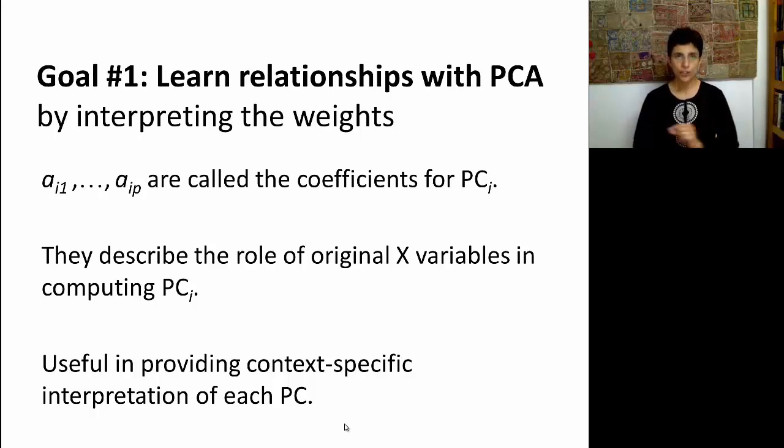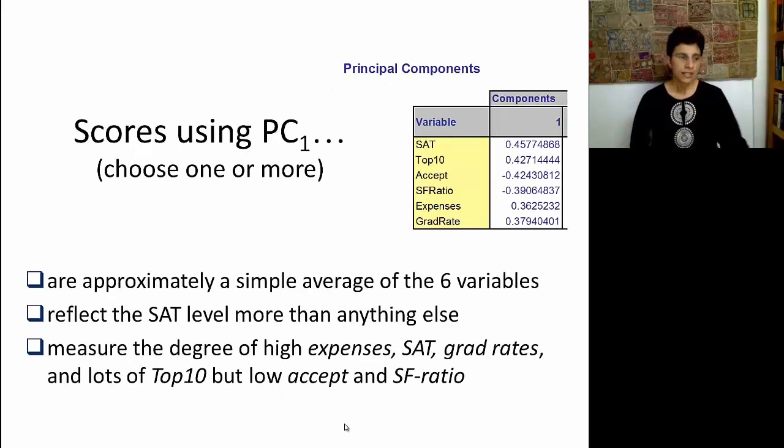Let's first look at the first goal, which is learning the relationships between the different measurements. How do we do this? Well, we have to concentrate on the weights that we just received. These weights, or also called coefficients, are the key to understanding what is the relationship between the original X's and the resulting PCs. Take a look at this first component at the weights, and see if you can answer this question right here.